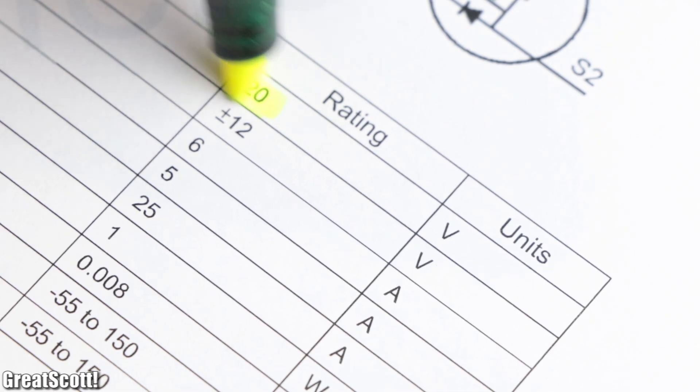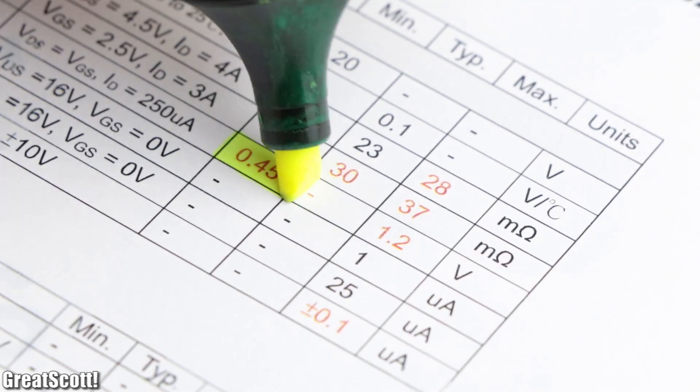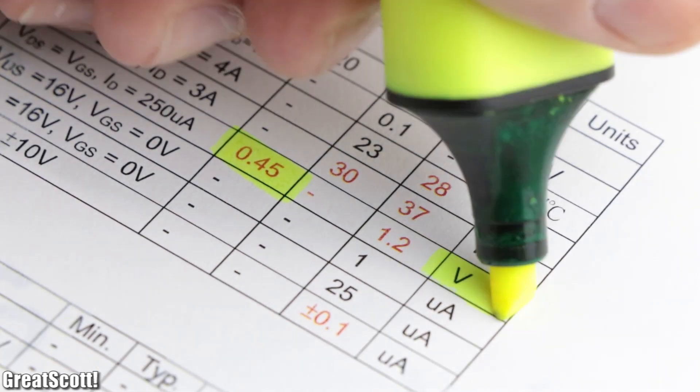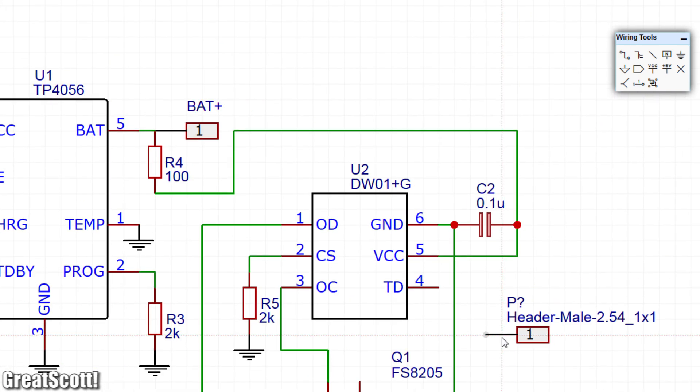A simple search for a dual N-channel MOSFET IC quickly delivered me the FS8205 IC which can withstand 20 volts, 6 amps and has a low gate threshold voltage of only 0.45 volts. Perfect. So I integrated this IC into the schematic and added solder pads for the LiPo battery.